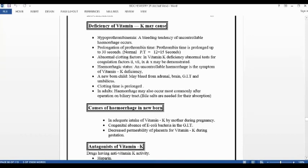Abnormal clotting factors. Now clotting factors are not made properly. Basically, the major role is clotting. So in vitamin K deficiency, abnormal tests for coagulation factors 2, 7, 9, 10 may be demonstrated. Abnormal tests are not in normal form.